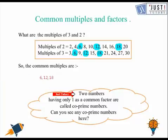Now let's think about this. Let's look at what co-prime numbers are. Any two numbers having only 1 as a common factor are called co-prime numbers.